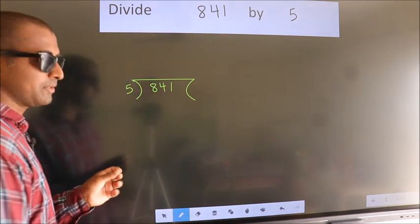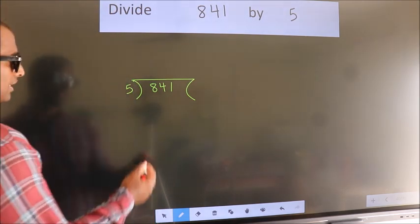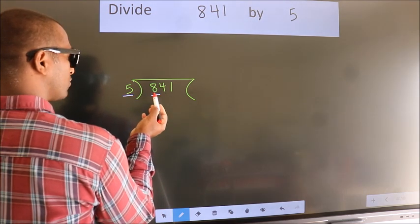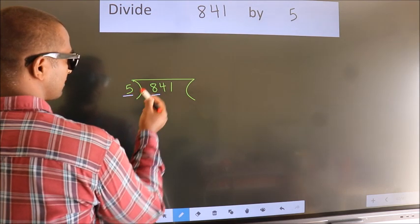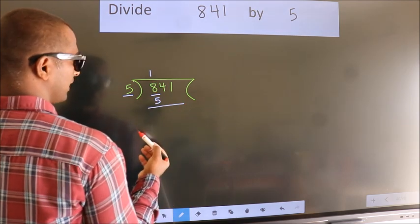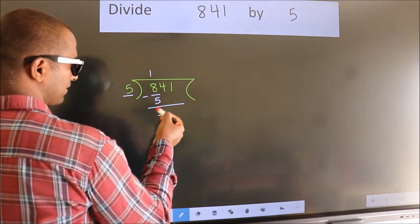This is your step 1. Next, here we have 8 and 5. A number close to 8 in the 5 table is 5 times 1 equals 5. Now we should subtract. We get 3. After this,